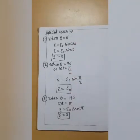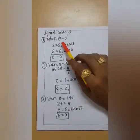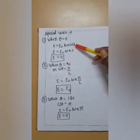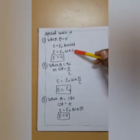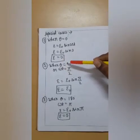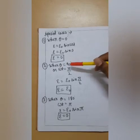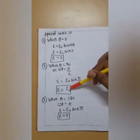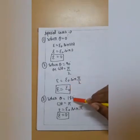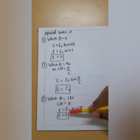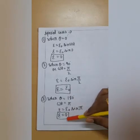Now, these are the various special cases. That is, when theta is 0, then obviously sin omega t would be sin 0 and sin 0 is 0. Therefore, our EMF would become 0. And when theta is equal to 90 degree, then this would become sin 90. Sin 90 is 1. So, our EMF would become maximum. That is, e is equal to e knot. If we will take theta as 180, then sin 180 is 0. Therefore, our EMF would also become 0.